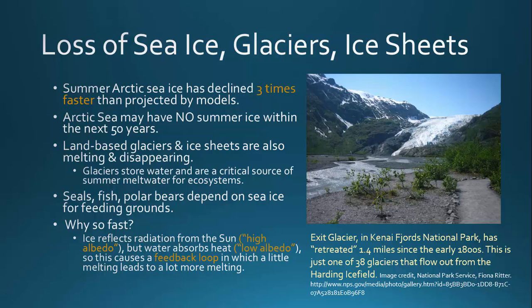Glaciers are really important for ecosystems in the Arctic because they store water and provide meltwater in the summer. This meltwater is critical for fish, other animals, and plant life in the area that depends on water throughout the summer when there may not be much precipitation. This is a major issue in places like Glacier National Park in Montana, where many of the glaciers have disappeared completely and are no longer providing meltwater during the summer.